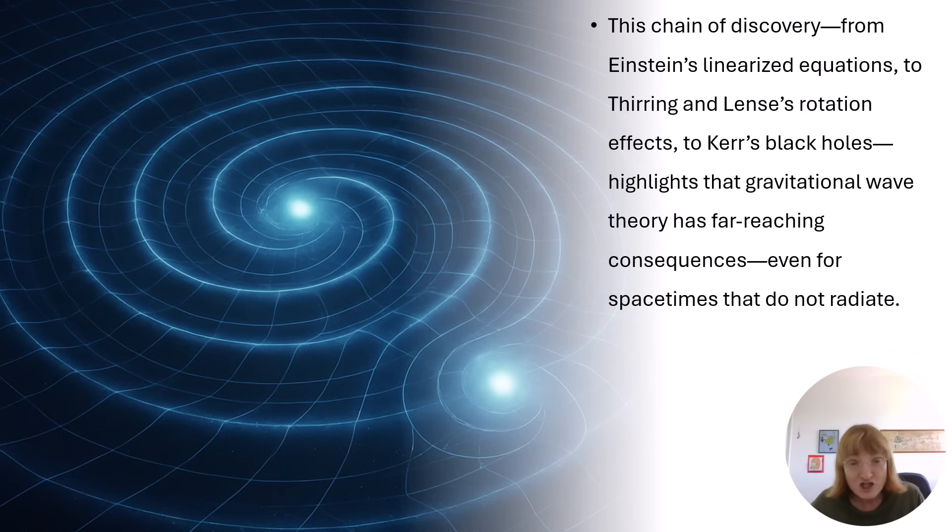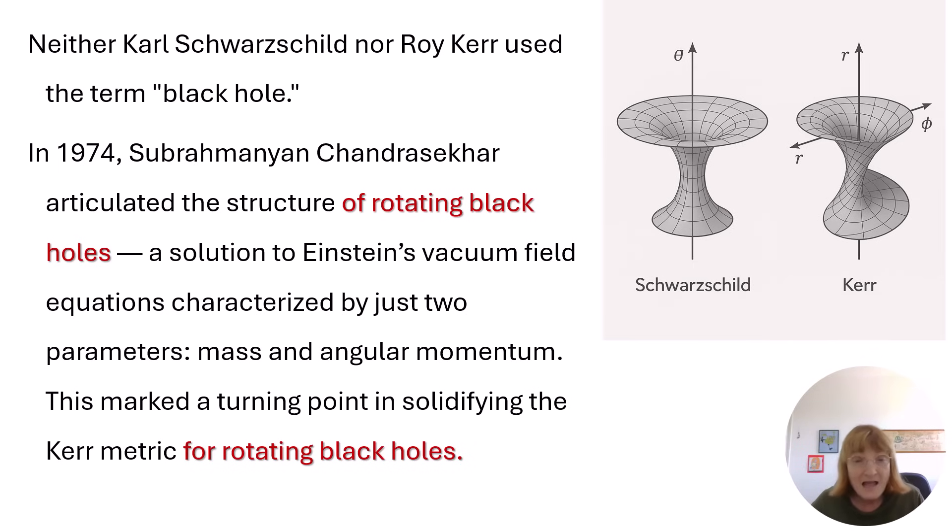This chain of discovery—from Einstein's linearized equations to Thirring and Lense's rotation effects to Kerr's black holes—highlights that gravitational wave theory has far-reaching consequences, even for spacetimes that do not radiate. Neither Karl Schwarzschild nor Roy Kerr used the term 'black hole.'